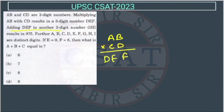Adding DEF to another three-digit number GHI, they are adding this DEF to GHI, and the result is 975. Further, ABCDEFGHI are distinct digits. So this is important, they are distinct digits.